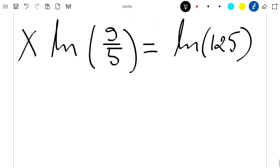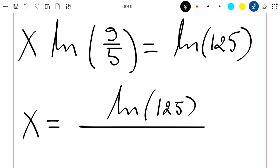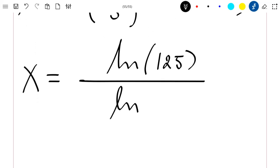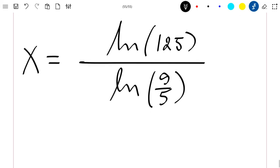So from this we can then see that the solution of our equation is x equal to the ln of 125 divided by ln of 9 divided by 5.